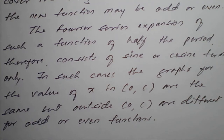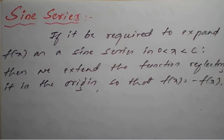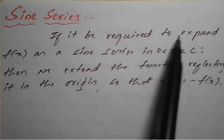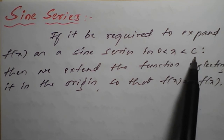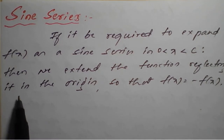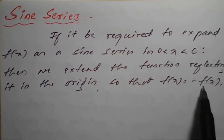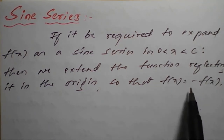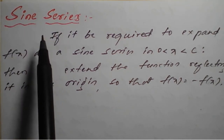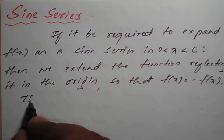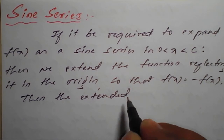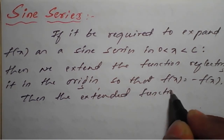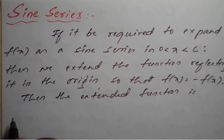Now we will see in particular what is the sine series in half range and what is the cosine series in half range in detail. Sine series: if it is required to expand f(x) as a sine series in x greater than 0, less than c — where c may take pi value or l value — then we extend the function reflecting it in the origin, so that f(x) equals minus f(-x), proving it is an odd function. The extended function is odd.